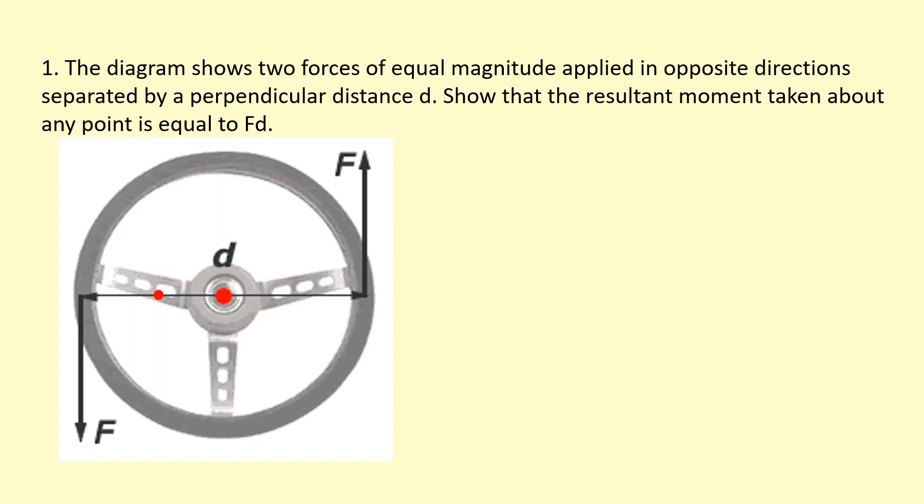I'm going to take moments about this point here. I'm going to say the distance from the left is x. So that means the distance towards the right from that point is going to be d, the total length, minus x.